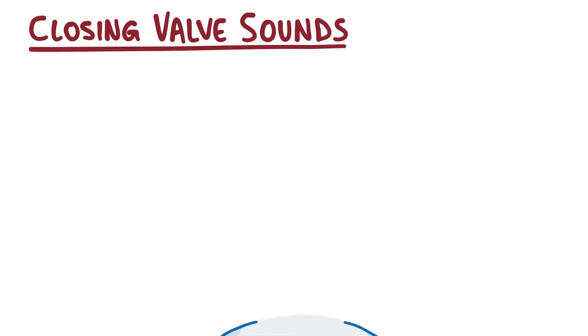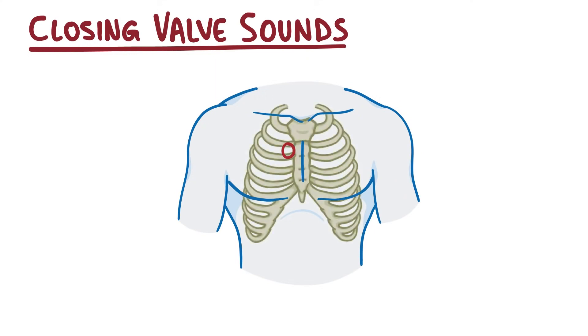Now the heart is positioned in such a way that the sound of the closing of each of these valves is projected onto a small area on the chest wall. If you put a stethoscope between the second and third rib, known as the right second intercostal space, just next to the upper border of the sternum, you'll hear the aortic valve closing.